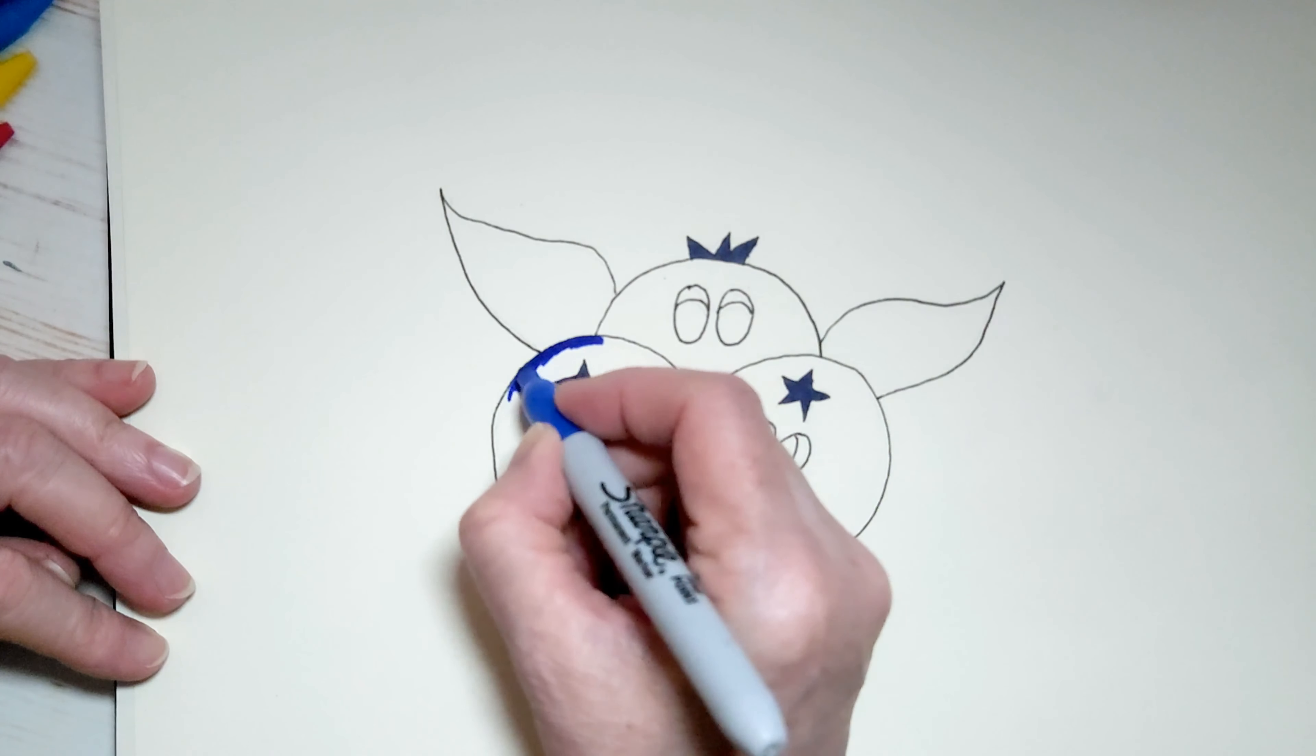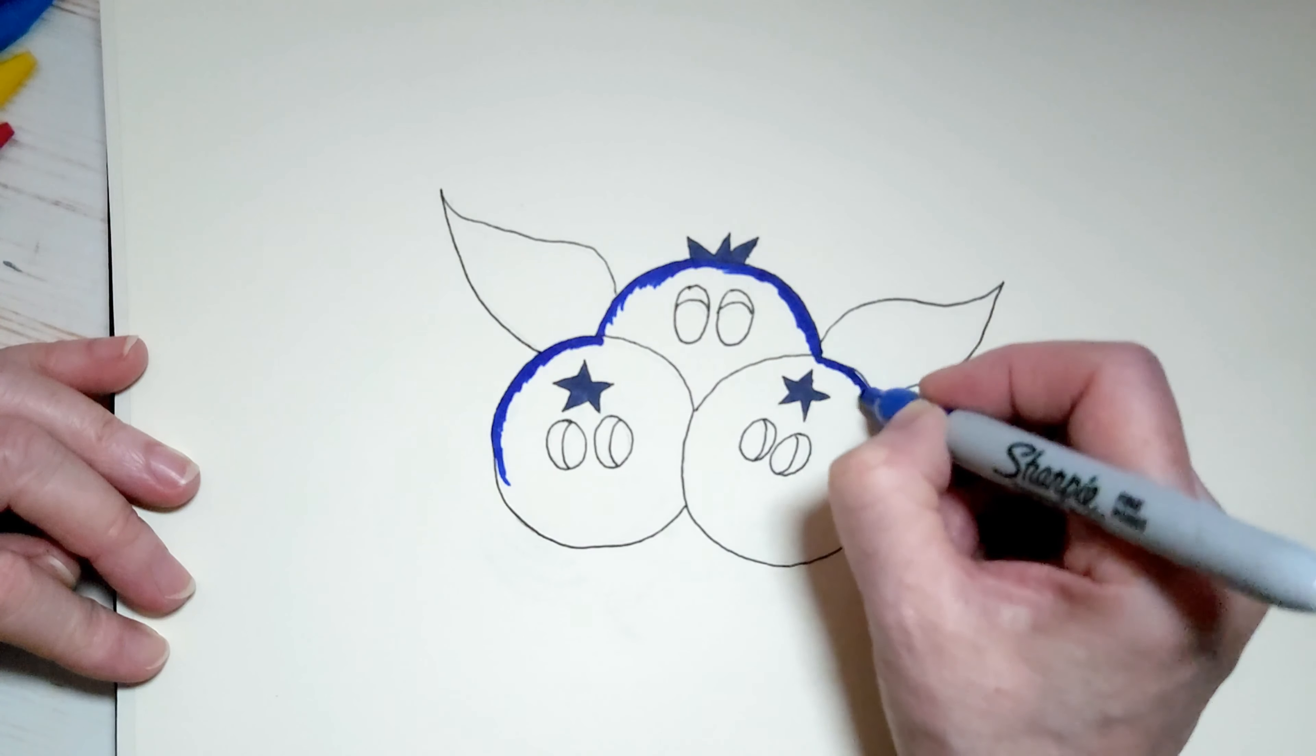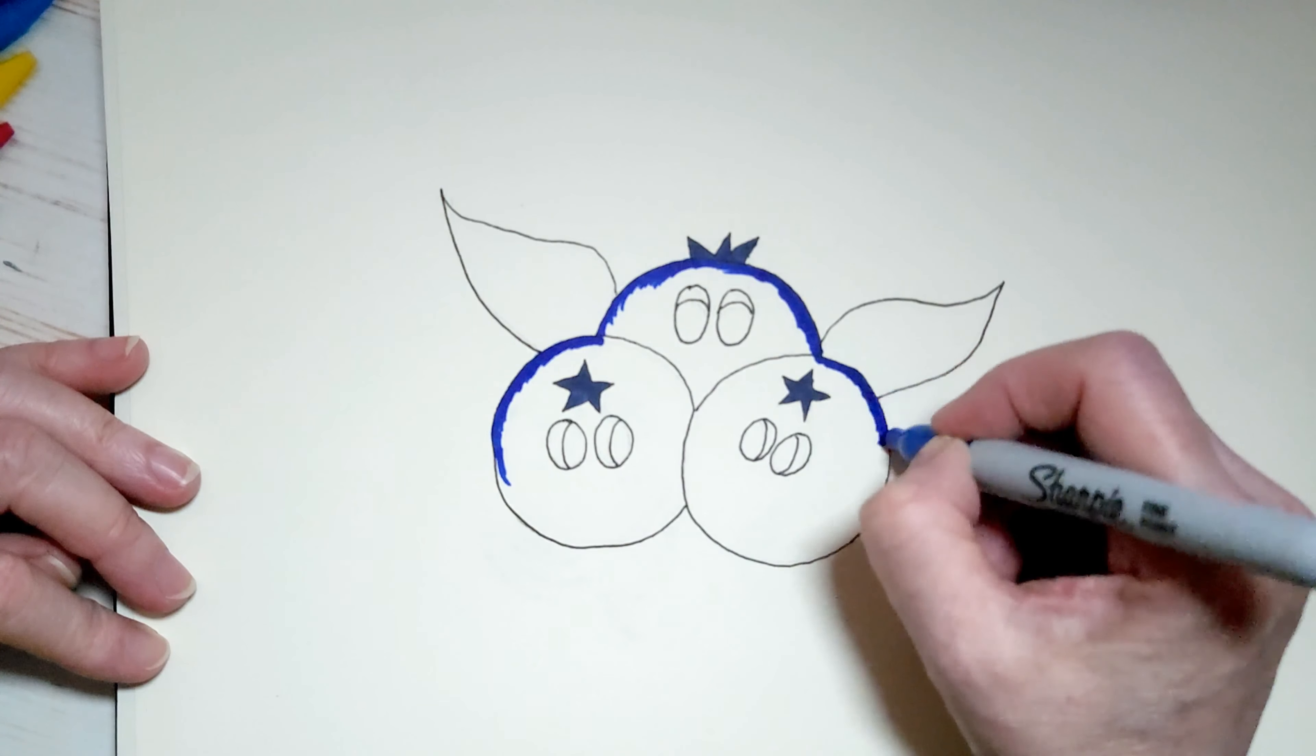And I'm going to color in my blueberries with this really nice royal blue color. It's very, very nice. And I'm going to be careful not to get any into the eyes or into the leaves, but the rest of the blueberries are this blue color. Do you like blueberries? I like blueberries in blueberry muffins. There's a car going by right now and I'm hoping that my dogs don't all start barking. I think we're safe. I like blueberry muffins, like I said.